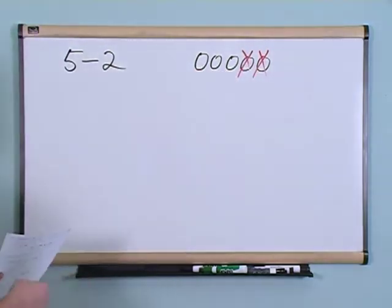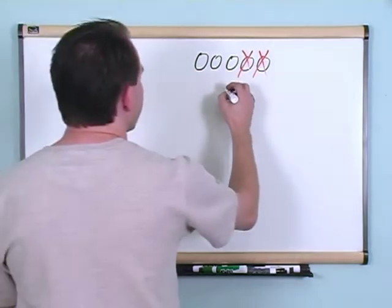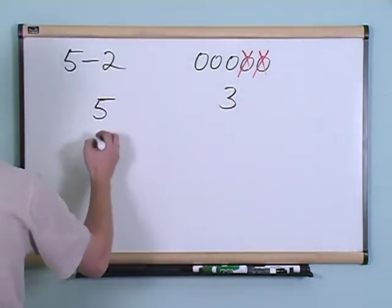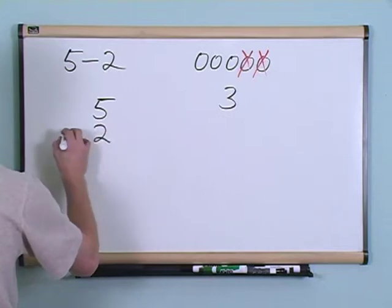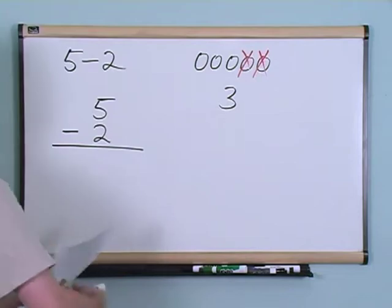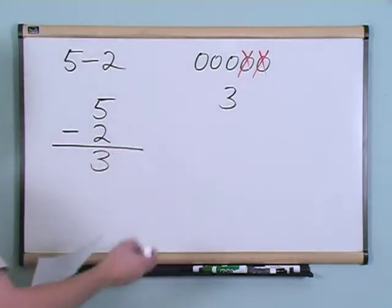That is what subtraction is. Now, you can see that in this case, you have three balls left. So the way you would write this is a five on the top, a two on the bottom with a subtraction sign, and then you would write down the answer just below here, and that would be a three.